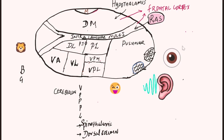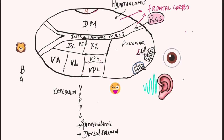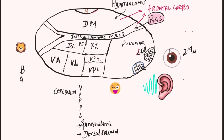F2. The frontal cortex is the efferent. If we want to process visual input, it goes through the superior colliculi.